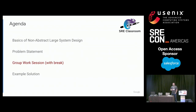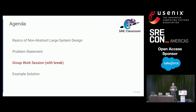The things we want to cover today are the basics of what we call NALSD — that is, non-abstract large system design. The non-abstract part is key. By the end of today, after we've gone through our group work and session, we will have a design for a distributed system along with a bill of materials for how we could actually go and build that system.